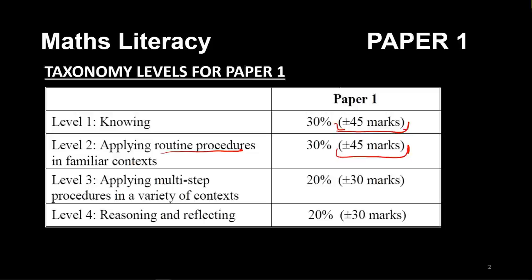Then we've got level three, where we take it a step further and we do multi-step calculations — more than two steps — giving you about 30 marks. And then level four has questions where you need to reason and reflect on what you are given, again about 30 marks. Those are your levels in order from the easiest to the most difficult.